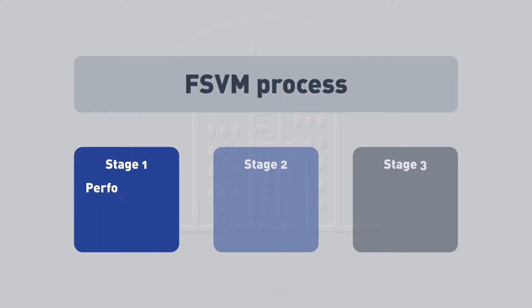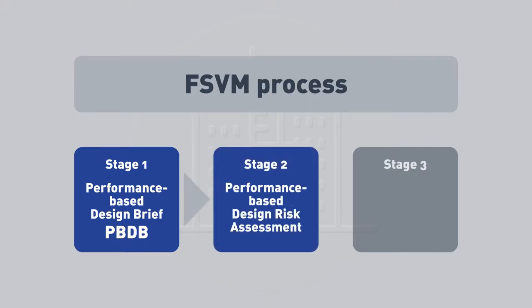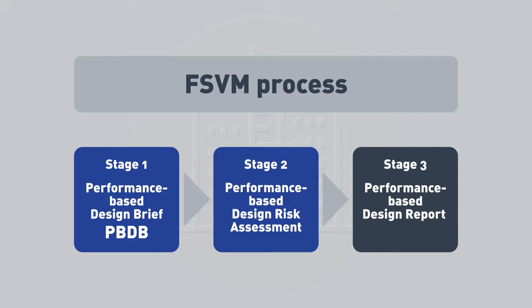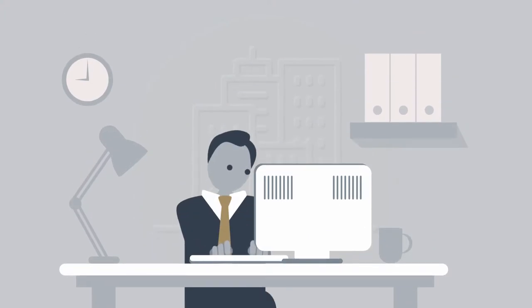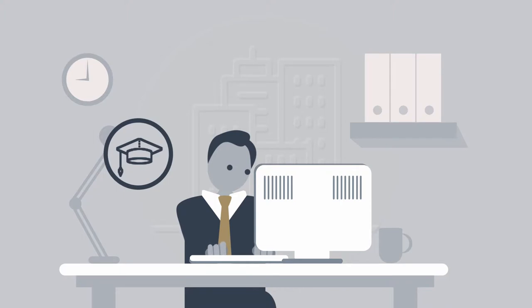The process for applying the verification method can be broken down into three key stages. The first stage is developing the Performance Based Design Brief, or PBDB, as outlined in part A2.24 of the governing requirements. The second stage is developing the performance based design risk assessment. These two stages are then combined to form the performance based design report — the third stage. The purpose of the report is to document how the proposed performance solution complies with the relevant fire safety performance requirements.